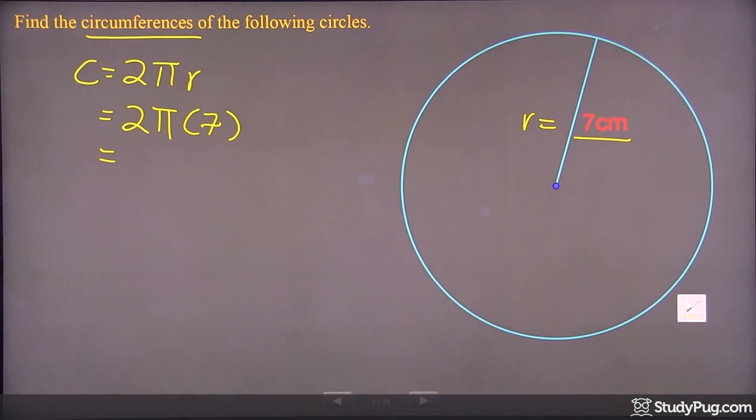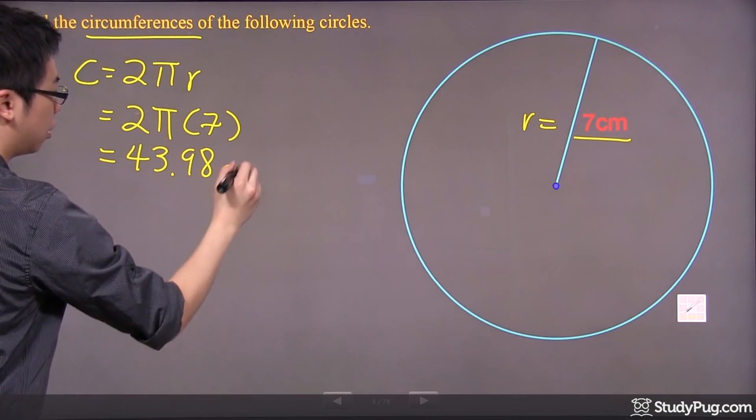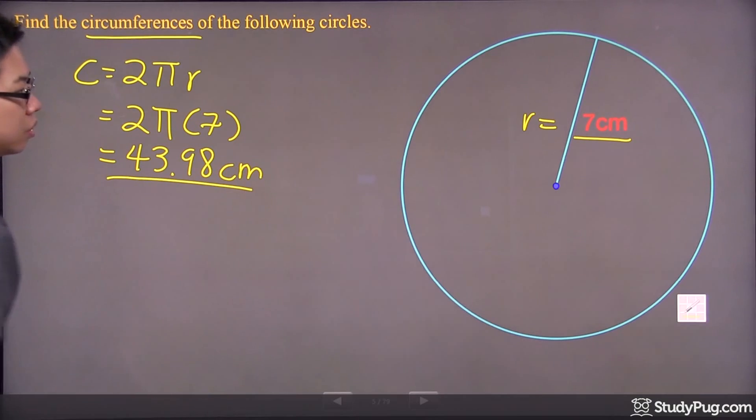So all you have to do is grab your calculator and punch in 2 times π times 7. You should come up with 43.98, and make sure you put down your unit, which is centimeters for this question.